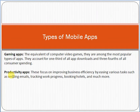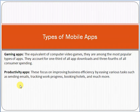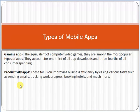Then there are productivity apps. These include apps like FoodPanda and similar apps used to order food from restaurants, order clothes online, and grocery store apps through which you can order groceries. These are very common and fall under the category of productivity apps.